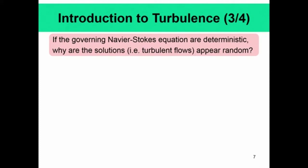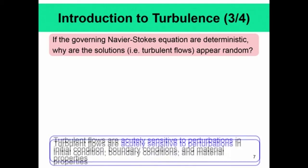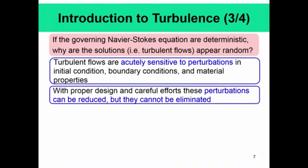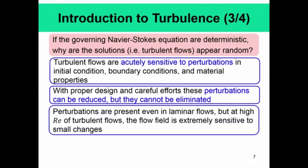Now, if the governing Navier-Stokes equations are deterministic, why do their solutions — turbulent flows — appear random? Just like any other non-linear system, turbulent flows are sensitive to perturbations in the initial conditions, boundary conditions, and material properties. Careful design can reduce these perturbations but cannot eliminate them. Perturbations are even present in laminar flows, but at high Reynolds numbers the flow field is extremely sensitive to small changes.